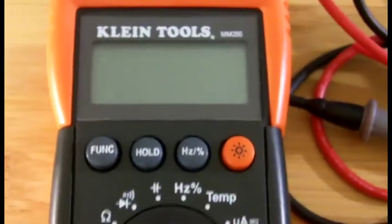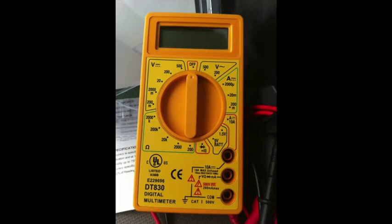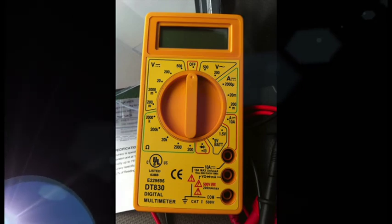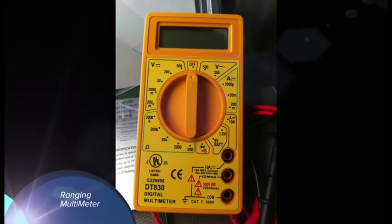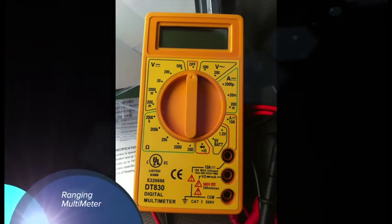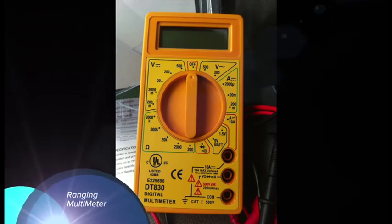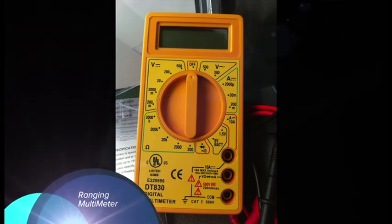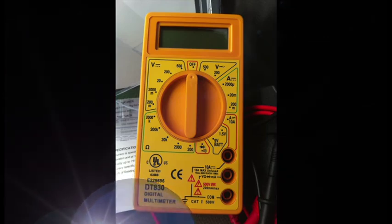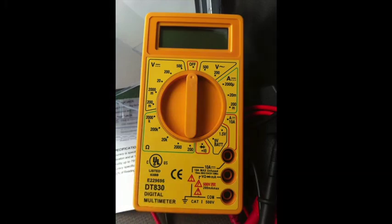Now what I was just showing you is an auto-ranging multimeter which figures out which level of voltage or item that you're trying to measure. The ranging ones require you to set the basic range of the item you're looking at. So if you know that you're looking at something that's 200 volts you have to set it to that range.